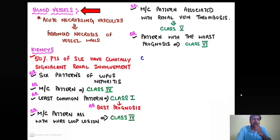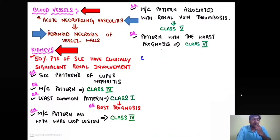What is happening in SLE at the blood vessel level? There is an acute necrotizing vasculitis, characterized by fibrinoid necrosis of the vessel wall.